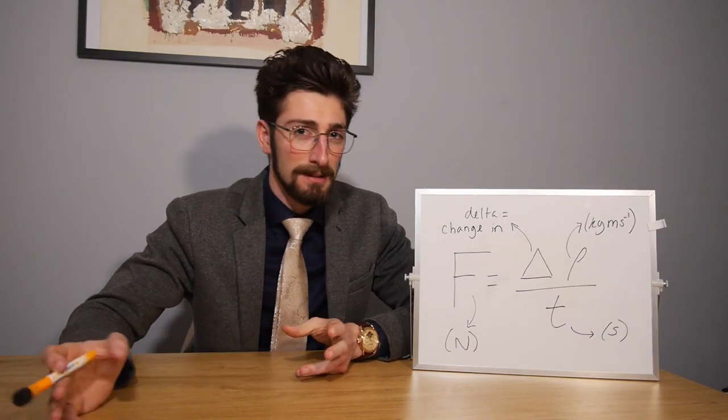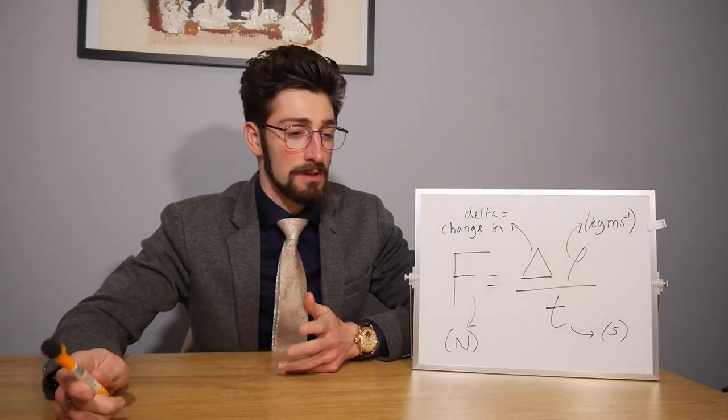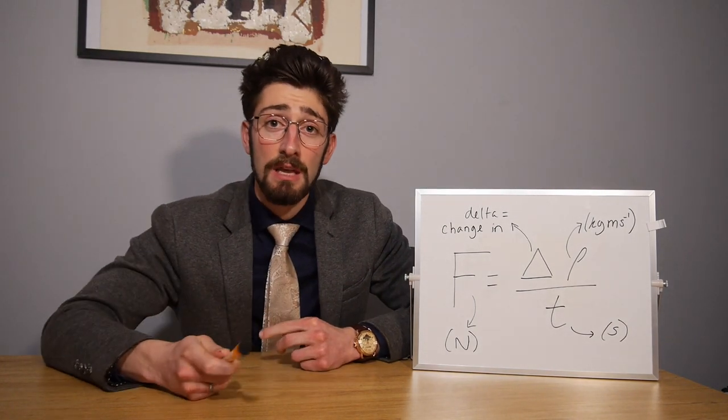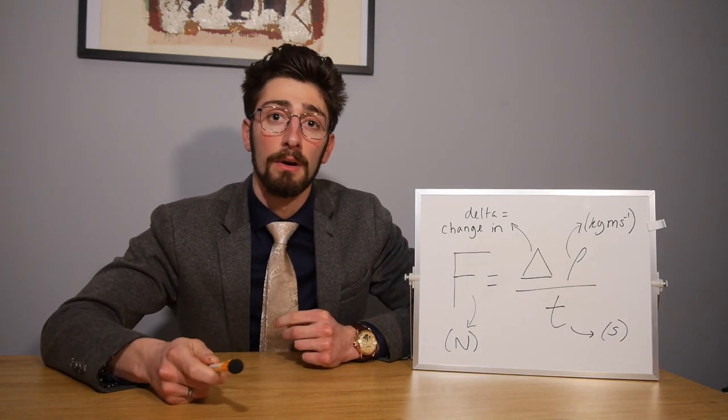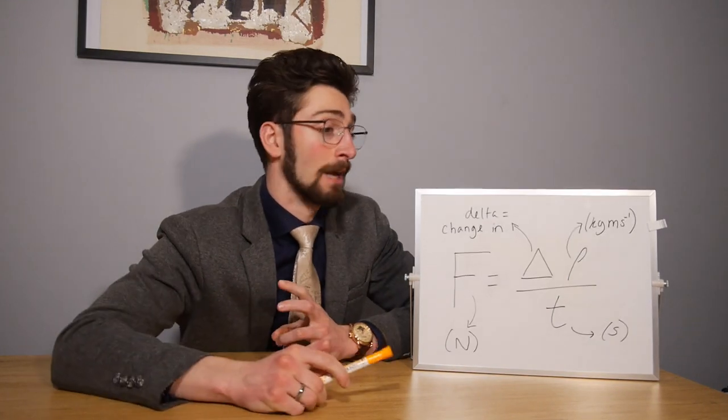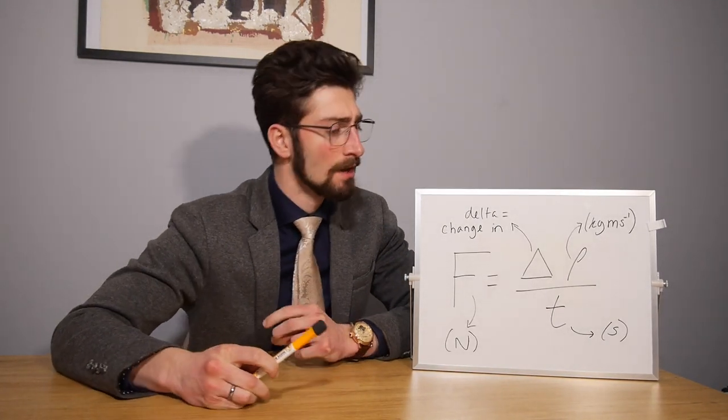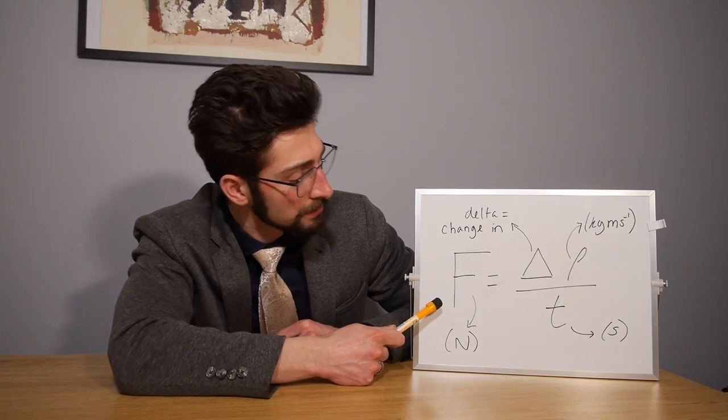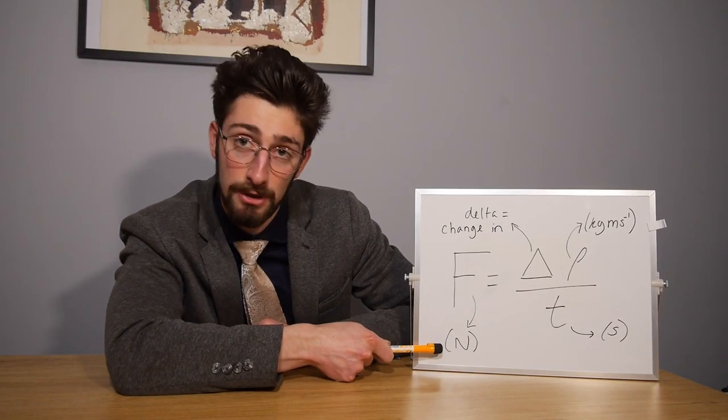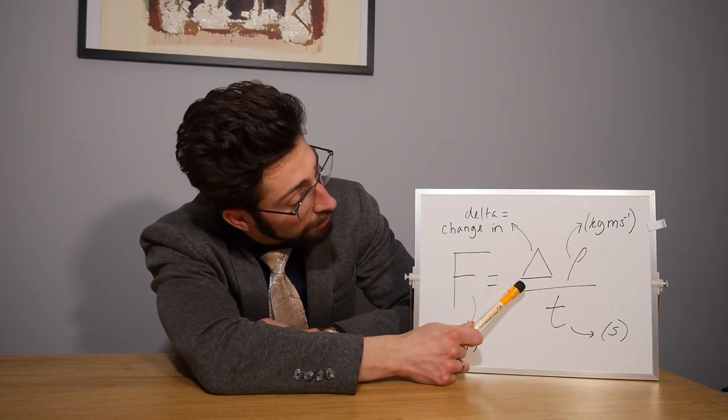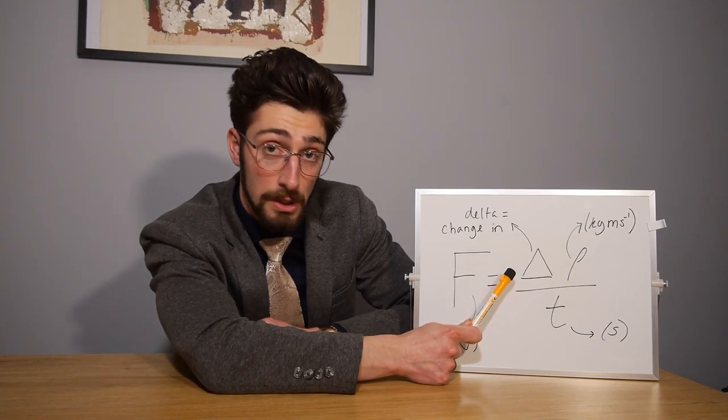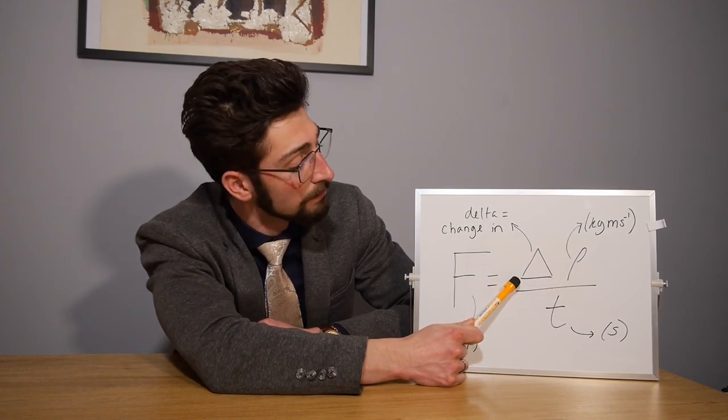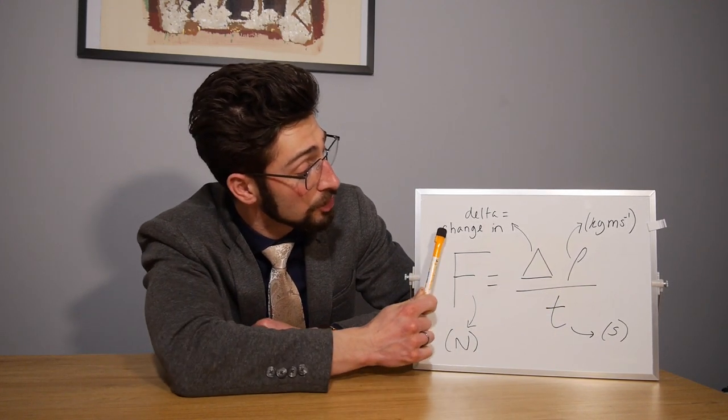So essentially, it all boils down to this equation over here on my left. And you've probably seen this equation before, but let's run through it. Let's run through what it means and how does it apply to seatbelts? Well, this equation represents force. So we've got force on the left, which is measured in Newtons. And then we've got, on the top half of our equation, the change in momentum. This means delta, this symbol here. It's the Greek letter for delta, and it means the change in.